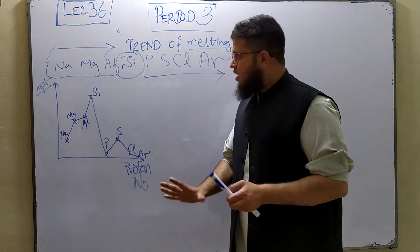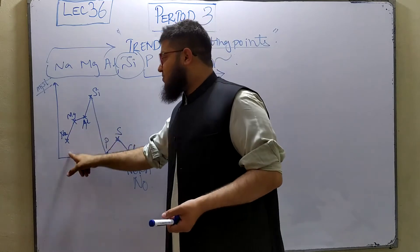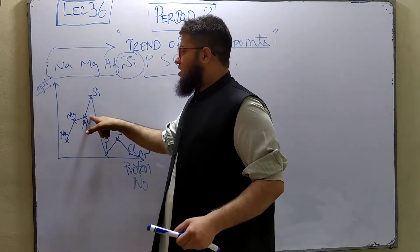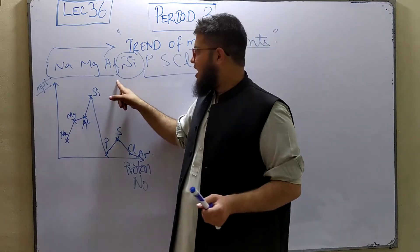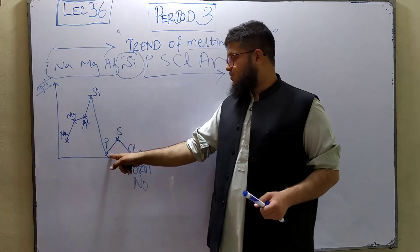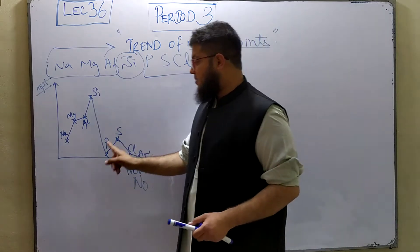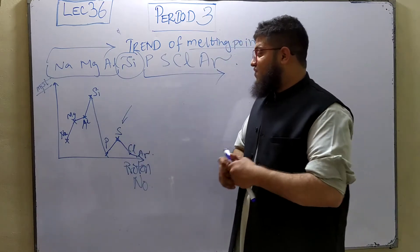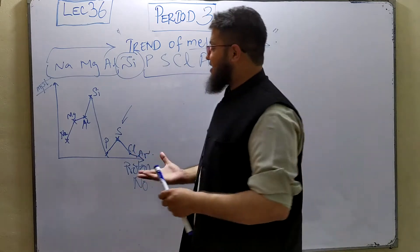Sodium has a particular melting point, magnesium will have a higher melting point, and then aluminum will have a slightly higher melting point than magnesium. Silicon will have the highest melting point overall. Then after silicon, phosphorus has a lower melting point compared to sodium and magnesium. Then comes sulfur, which has a higher melting point than phosphorus — that itself is a question. Then comes chlorine, and finally argon.